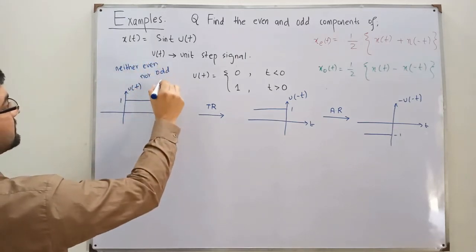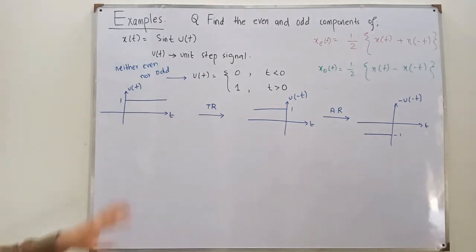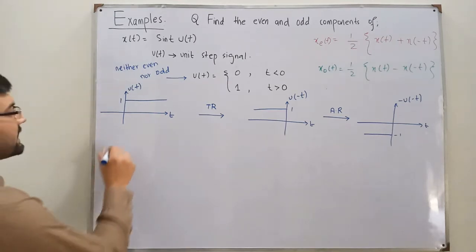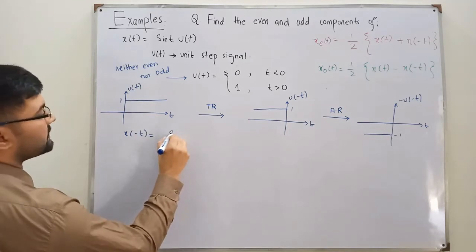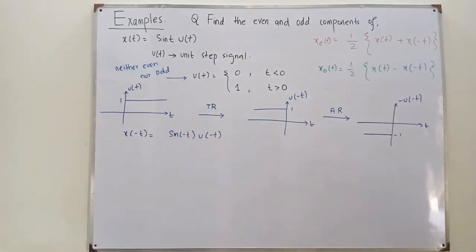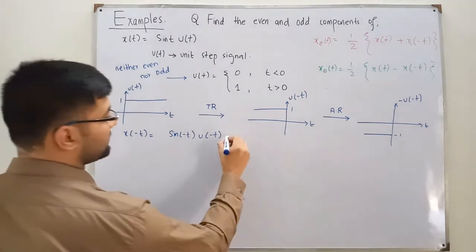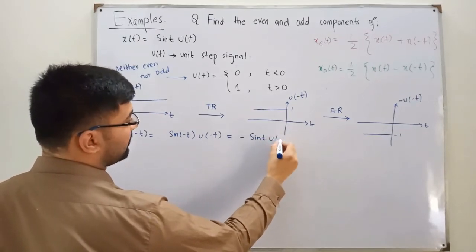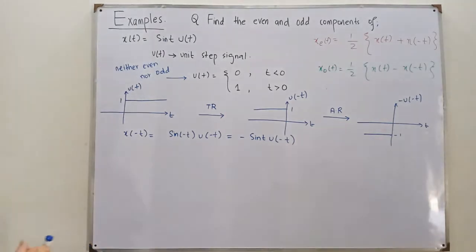We may have a detailed discussion on this signal later in the course. Coming to this question about even and odd components: we find x(-t), which would be sine of negative t times u(-t). Since sine of negative t equals negative sine of t, x(-t) equals negative sine of t times u(-t).